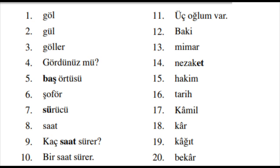Now look at number 17. In rare cases, a long A is shown by the letter A with a circumflex over it. Listen and repeat number 17. Kâmil. The long A affects the sound of a preceding K, making it sound softer — somewhat like 'kya' or 'cha.' Try to read number 17. Kâmil.